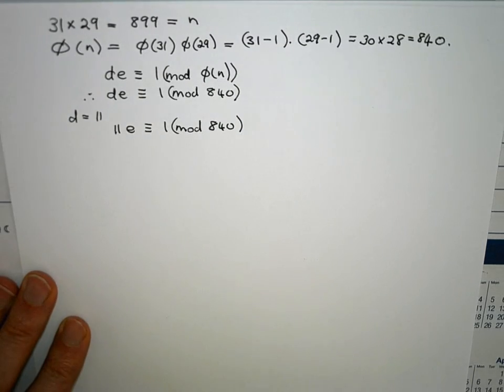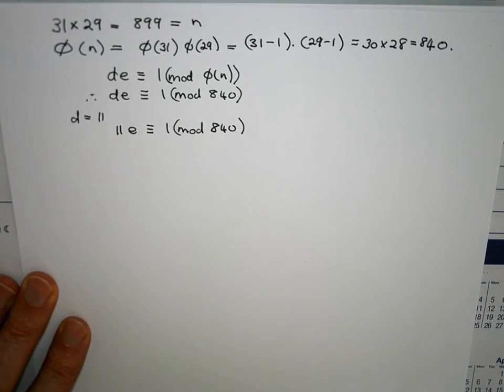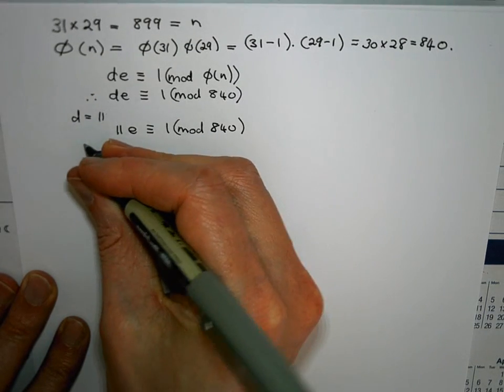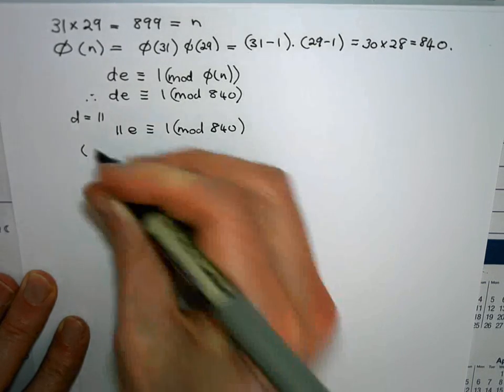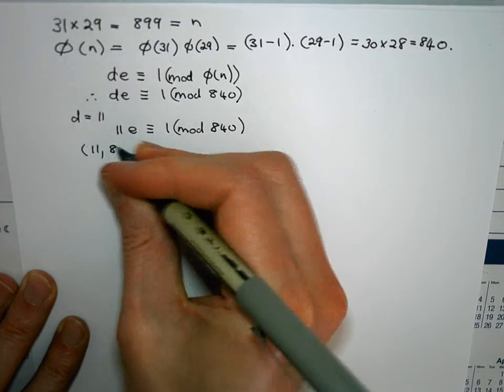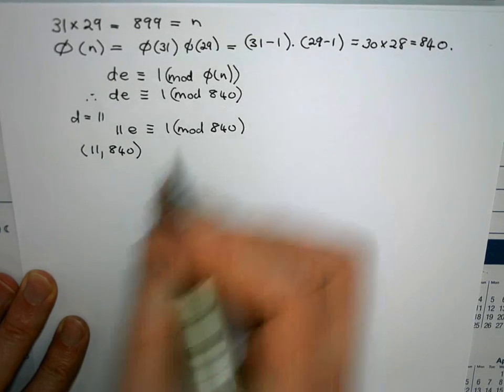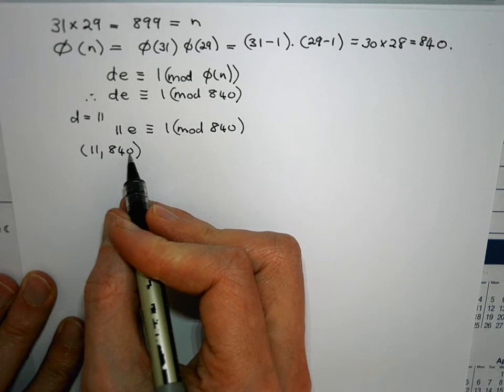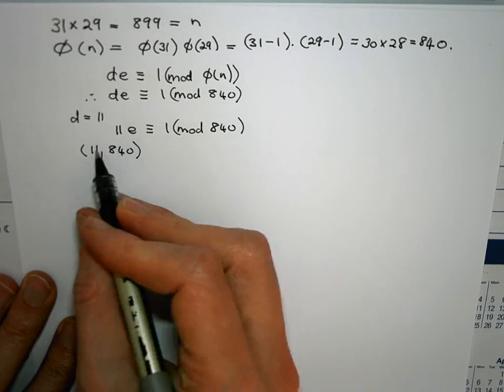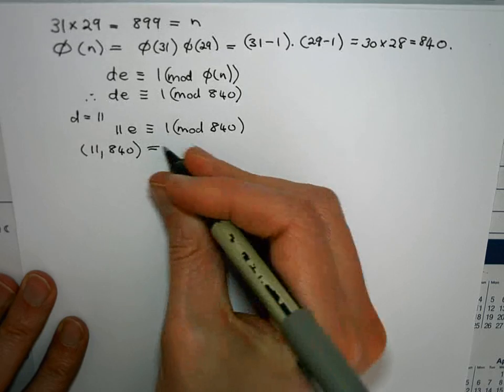So firstly, looking back at our knowledge of linear congruences we need to look at the GCD of this guy and that guy. So the GCD of 11 and 840. You can go and check that. If you factorize both of these into powers of different primes you will see very quickly that they are relatively prime. So their GCD is 1.